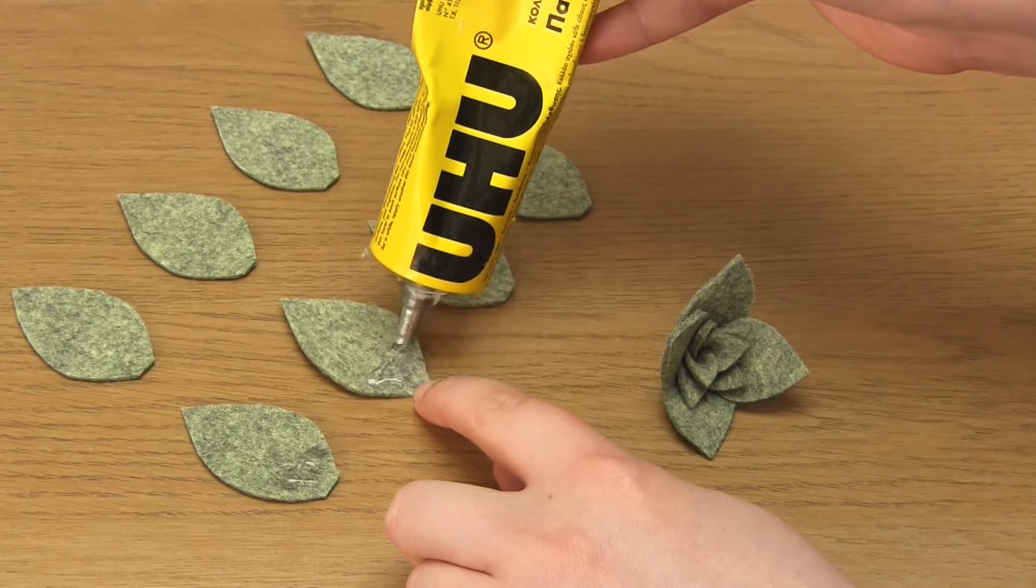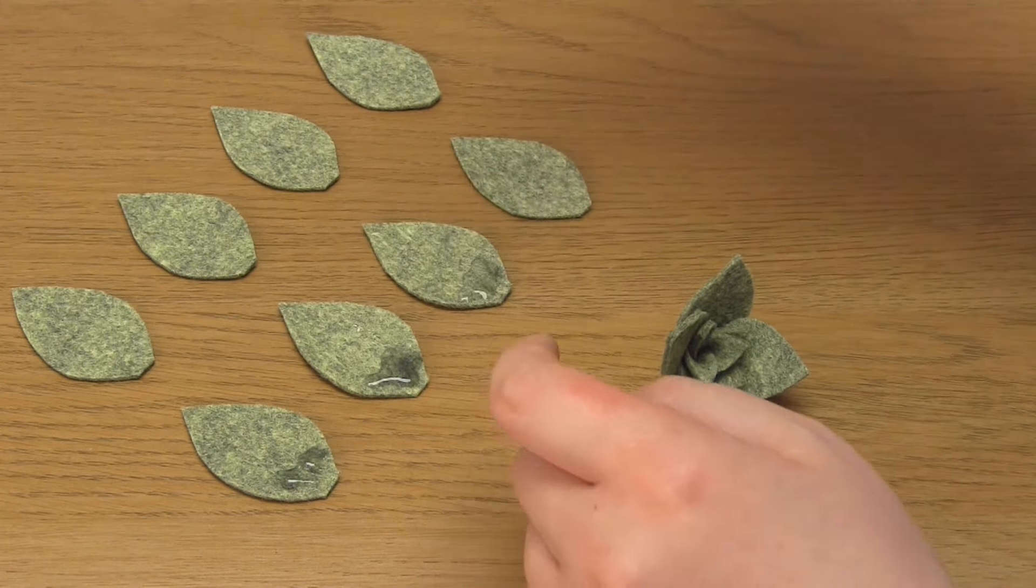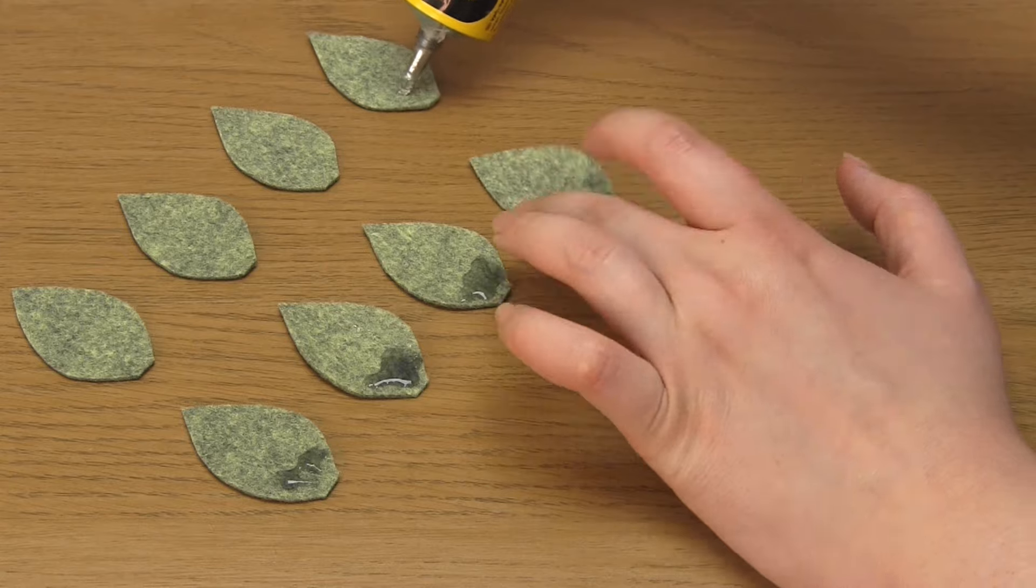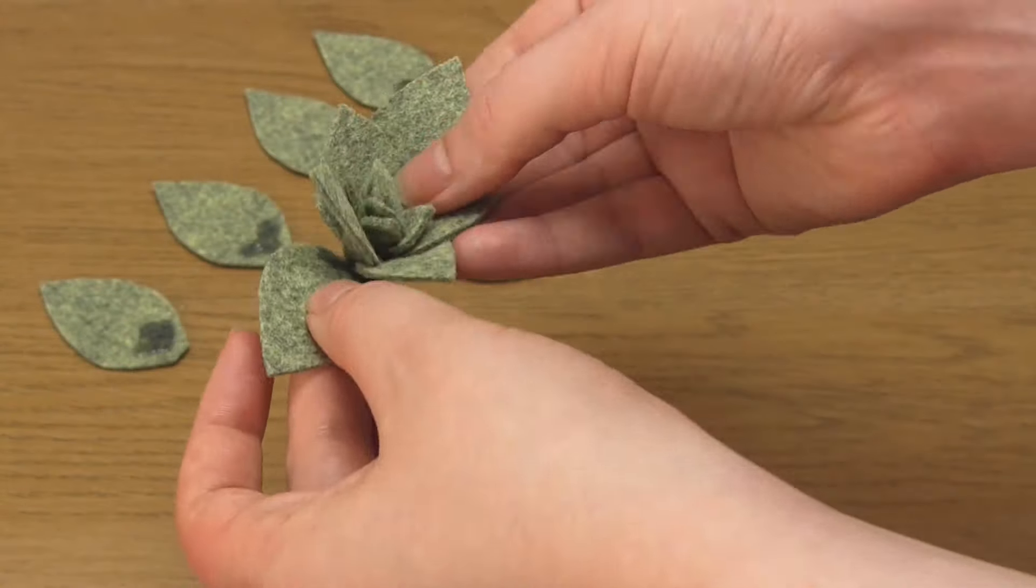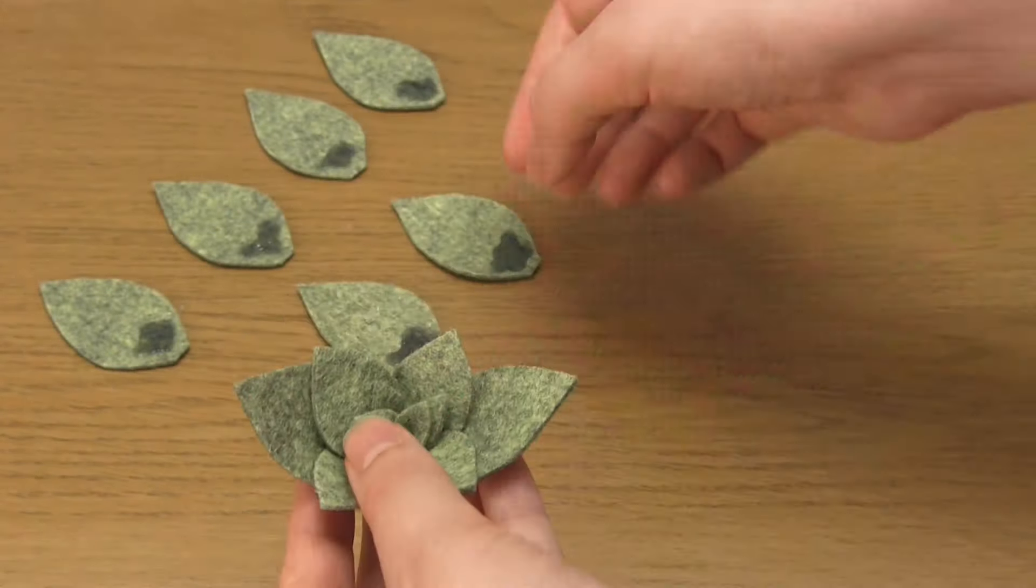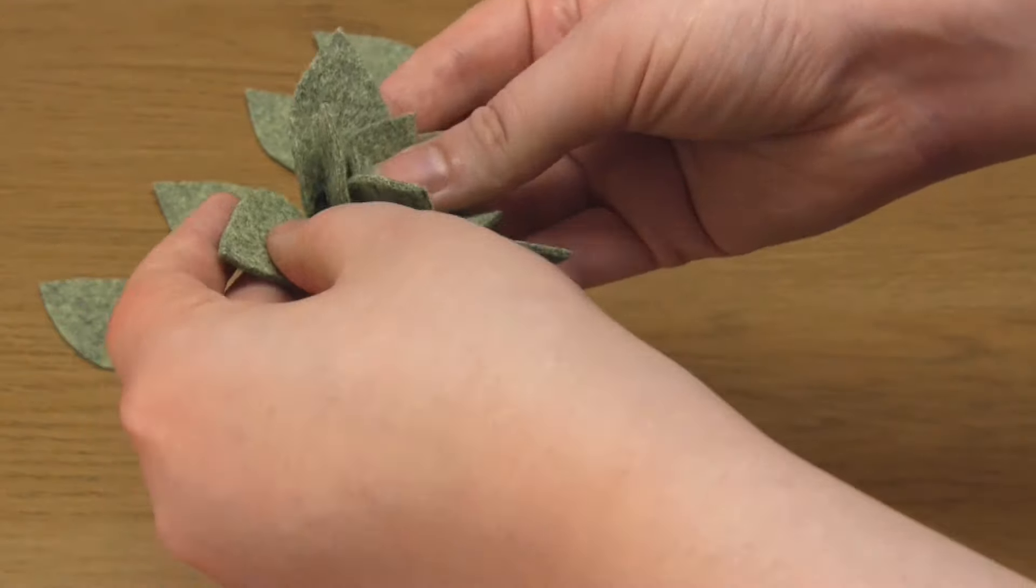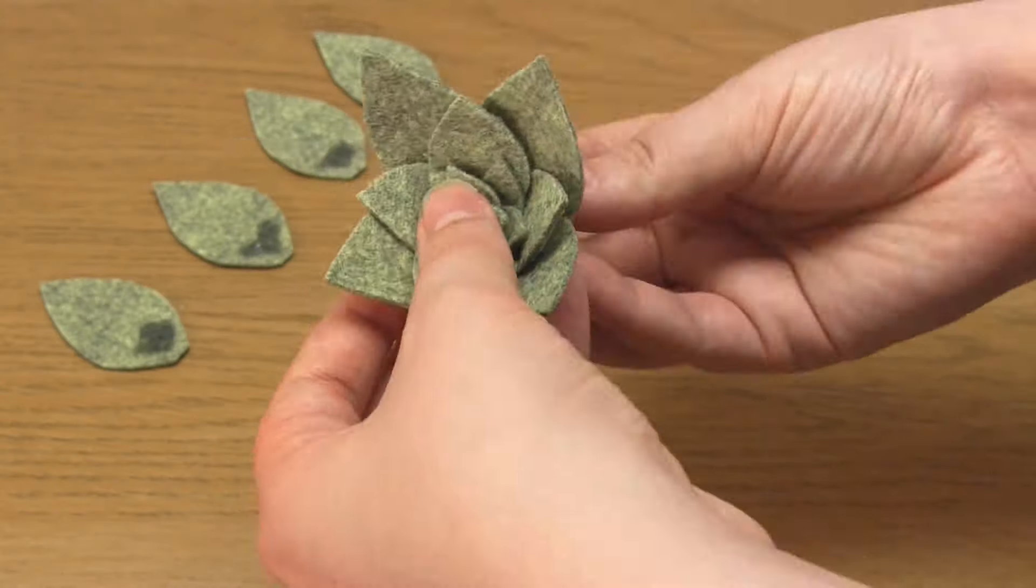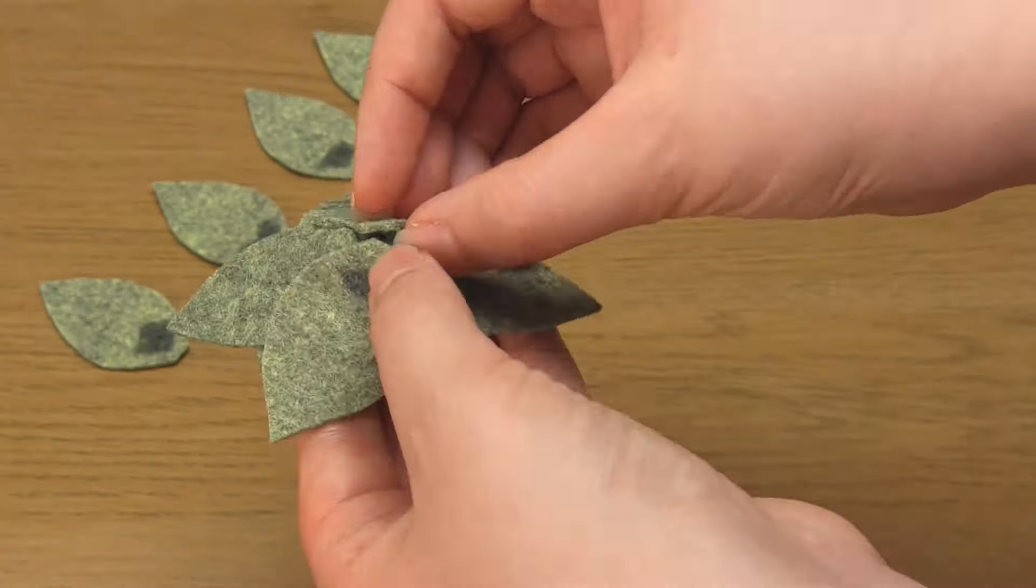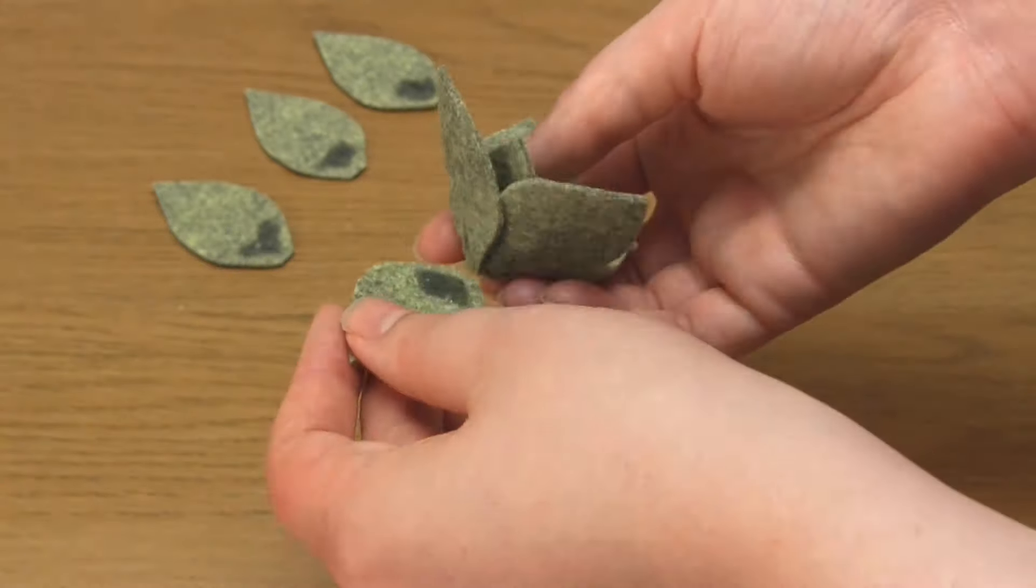Then do the same for the largest leaves by adding them two at a time, on opposite sides. You want the last four leaves to sit in the gaps of the previous layer.